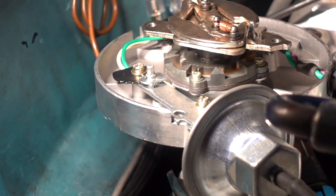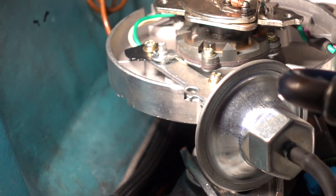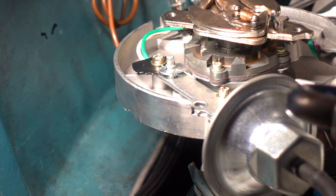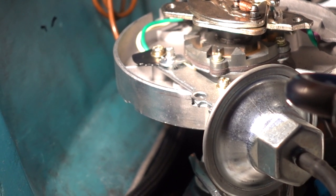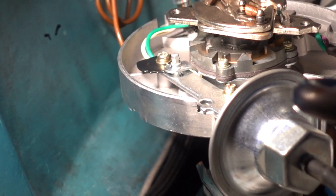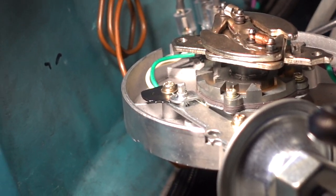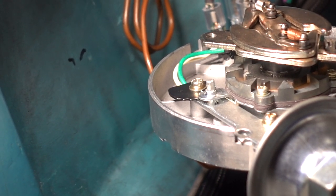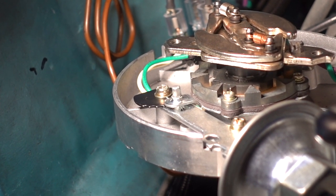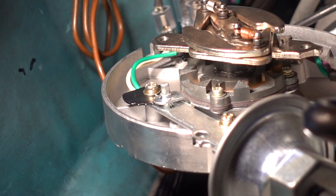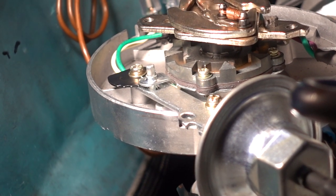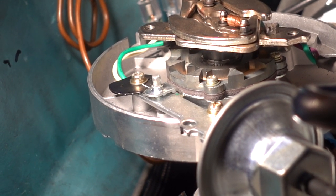So here's the Fast HEI distributor, and you can see the vacuum advance canister on the right. You put an Allen wrench in where that hose goes, and you can increase or decrease the pressure in the spring that's in there, thereby making the vacuum advance come in faster or slower. And then at the back of the vacuum advance canister, you can see that black cam shaped piece right in front of those two wires. And you adjust that by rotating it, and that gives you more or less advance.